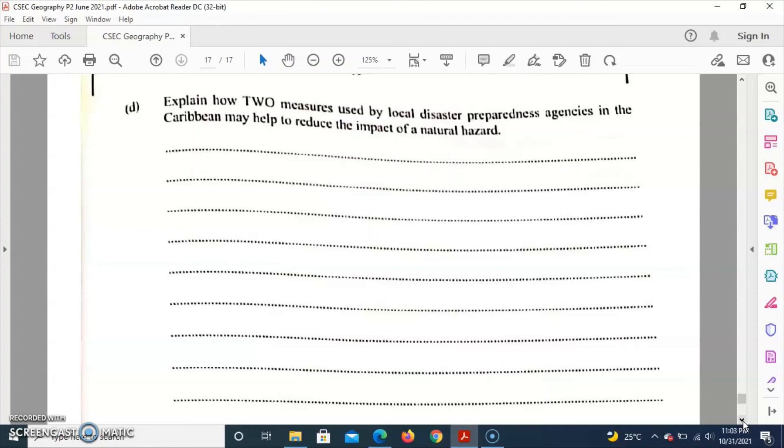The local agencies aid in the preparation of different areas where the natural hazard hence they assist with the cleaning of gullies and drains, as well as they organize shelters for persons who may need it. So these local agencies help us on a local level to be hazard prepared in a sense, so as to basically reduce effects that the hazard may have on the population.